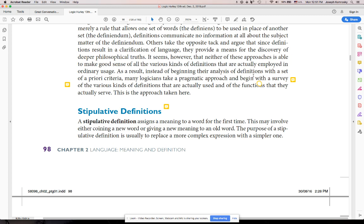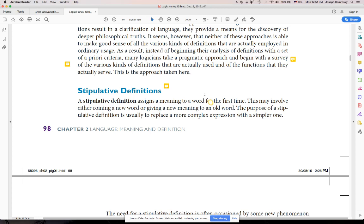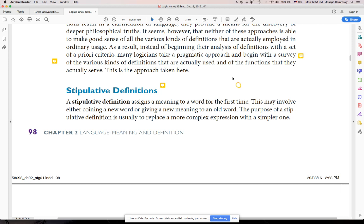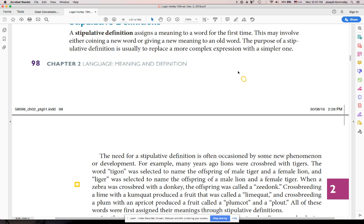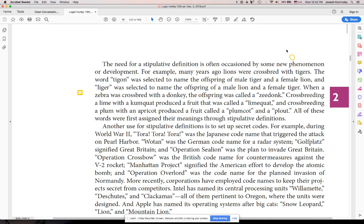Then in this section, we'll have a few types of definitions. Stipulative, this is my favorite of all. This is when you combine two words. Stipulative definition assigns a meaning to a word for the first time. This may involve either coining a new word or giving a new meaning to an old word.